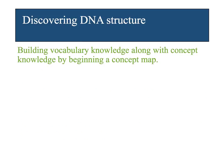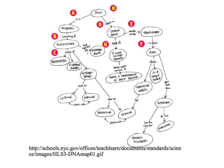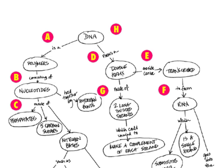Students are going to build their vocabulary knowledge along with their concept knowledge by beginning a concept map. Here's an example of one on DNA where the top structure is DNA and all these ideas branch out from there. Zooming in, you can see it's not just the concepts — it's how they're tied together. For example: DNA forms a double helix, which is made of two long twisted strands. Students will be working on this to really learn the science vocabulary they need to understand.